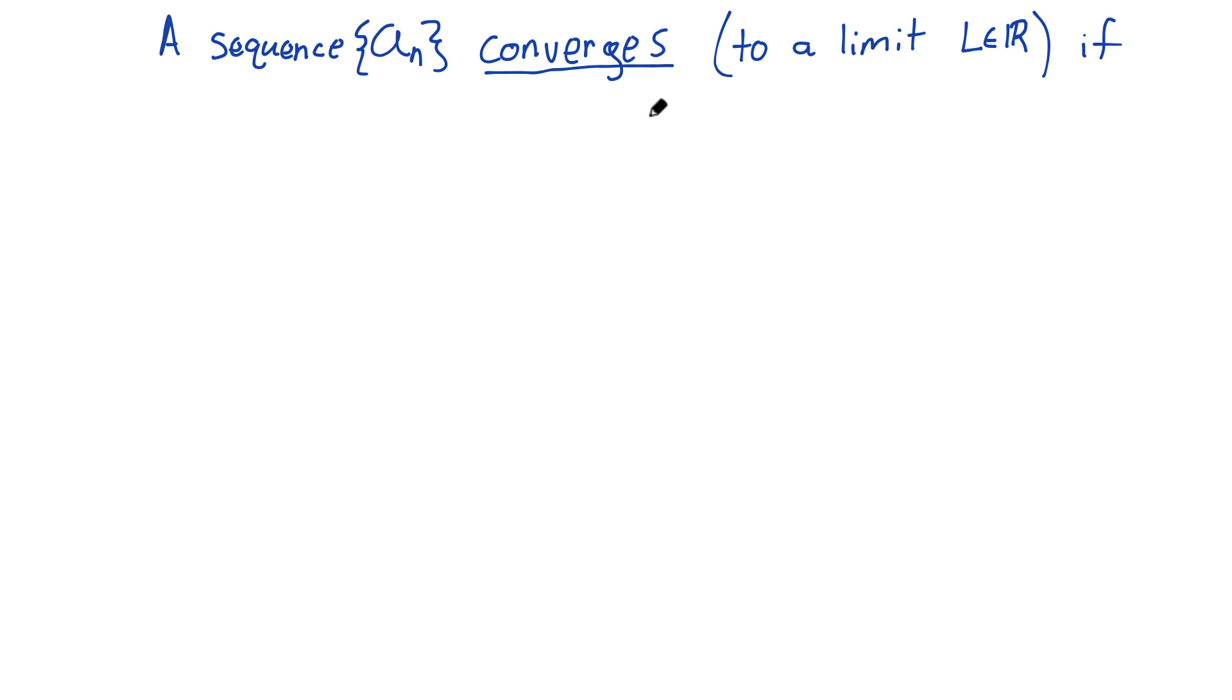A sequence a_n converges to a limit L, where L is a real number, if this happens: if for every epsilon greater than zero—think of epsilon as a very small positive real number, a very small quantity.